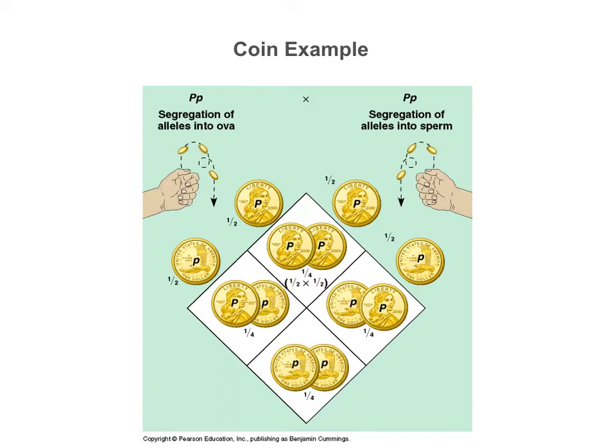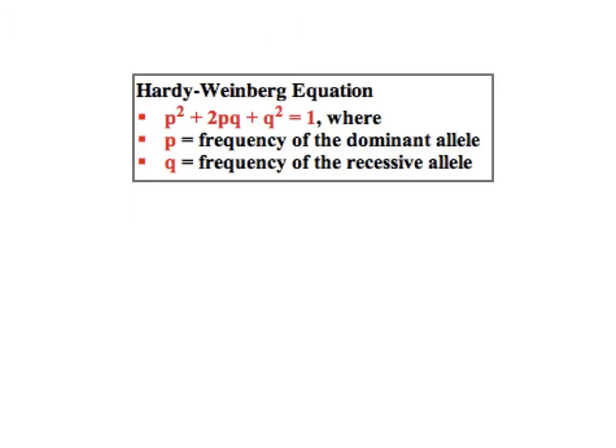Rather than calling it big A and little a, we use P and Q, where P is the frequency of one allele and Q is the frequency of the other. This generates what's known as the Hardy-Weinberg equilibrium equation: P² + 2PQ + Q² = 1, where P² is the frequency of the homozygous P genotype, 2PQ is the frequency of the heterozygous genotype, and Q² is the frequency of the homozygous Q genotype.